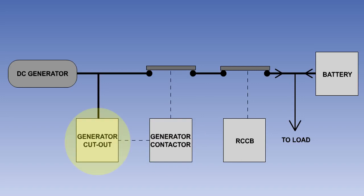The generator contactor is usually opened by the generator cutout, when it senses a reverse current flow. This is fully explained in the lesson on DC generators.